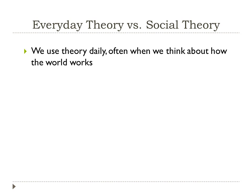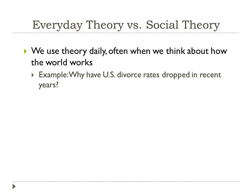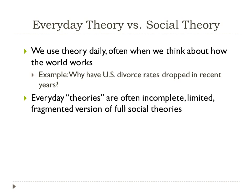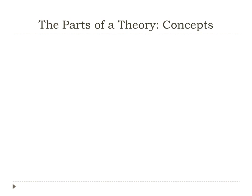We often use theory daily when we're thinking about how the world works around us. For example, if you're sitting around thinking, 'Why have U.S. divorce rates dropped in recent years?' you're kind of using a theory. But our everyday theories are often incomplete and limited — they're fragmented versions of what a full social theory actually is.